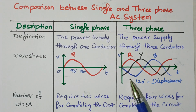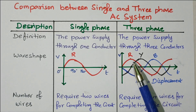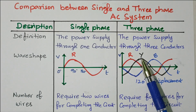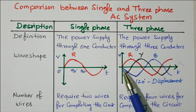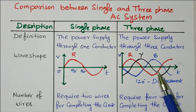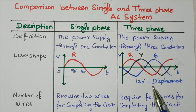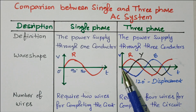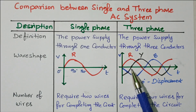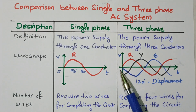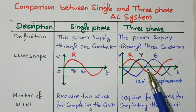In three-phase AC supply, three voltages are available: R, Y, B — that is Red, Yellow, Blue. The red phase starts at zero degrees and goes like a single-phase waveform. The Y phase starts at 120 degrees. There is a 120-degree phase displacement between each phase. The B phase starts at 240 degrees. So R phase: zero degrees, Y phase: 120 degrees, B phase: 240 degrees.